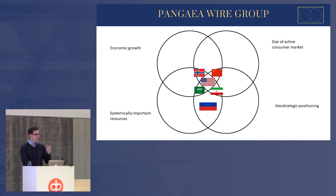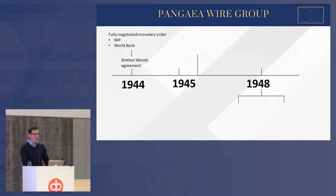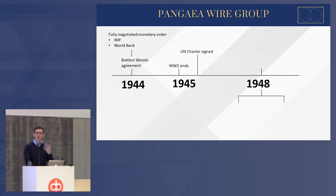It goes back to three main key dates I want to talk about. We have the Bretton Woods Agreement, which formed the monetary policy of the developed world — a fully integrated monetary order which created the IMF and the World Bank. We also have World War II and the ending of that, and we have the UN Charter signed shortly afterwards as well.